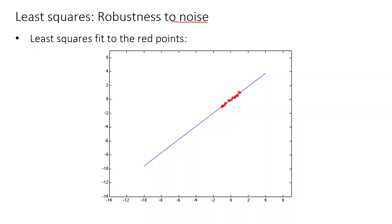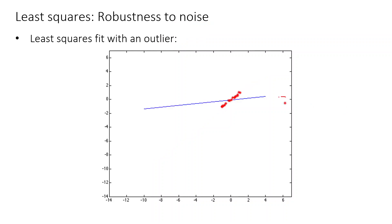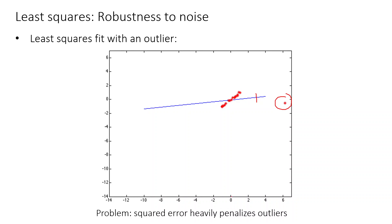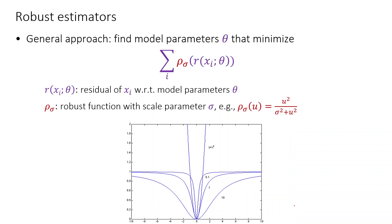Now about robustifying — we need to consider the robustness of these models to noise. With least squares line fitting, if we have an outlier, the solution gets totally affected because the distance between the line and the outlier is huge, and when you square it, it is even larger. The problem is that squared error heavily penalizes outliers.